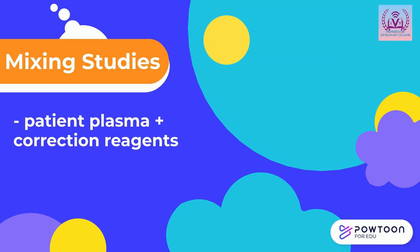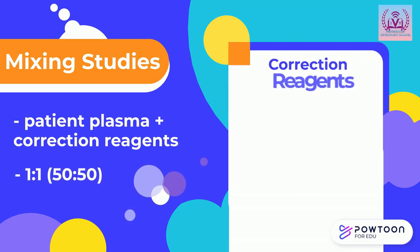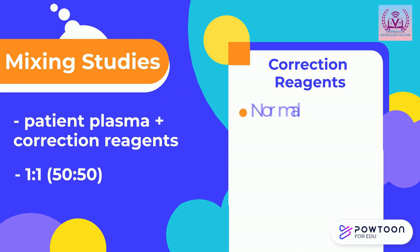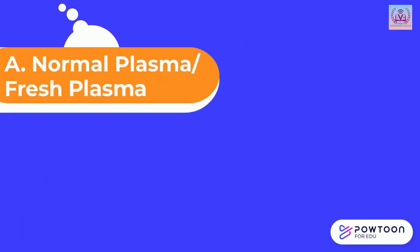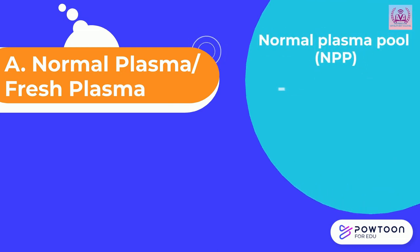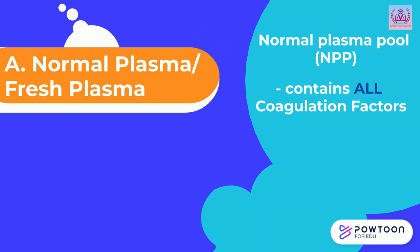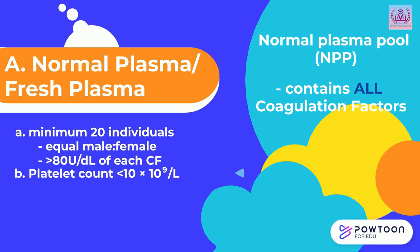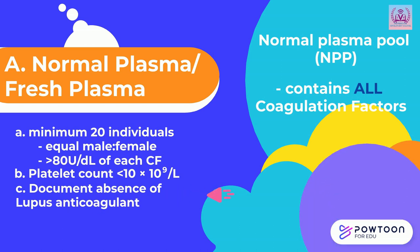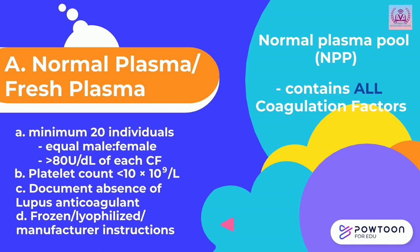Mixing studies generally apply a one-to-one, or 50/50, equal volume mixture. Correction reagents used include normal plasma (or fresh plasma), aged plasma, aged serum, and adsorbed plasma. Normal pooled plasma contains all coagulation factors, comprised from a minimum of 20 normal individuals — preferably an equal ratio of male and female — to statistically yield more than 80 units per deciliter of each coagulation factor. The platelet count should be low (less than 10×10⁹/L), the absence of lupus anticoagulant must be documented, and the NPP can be frozen or lyophilized.